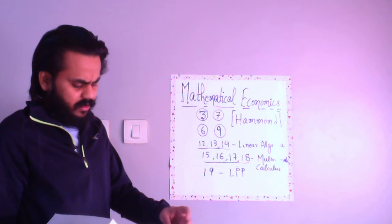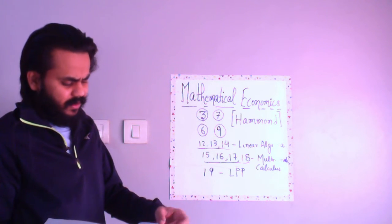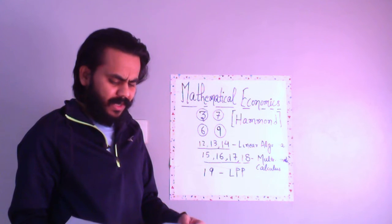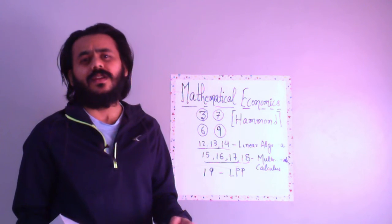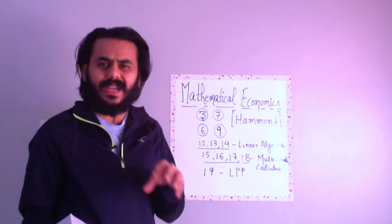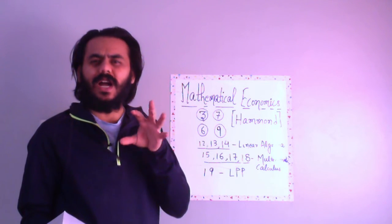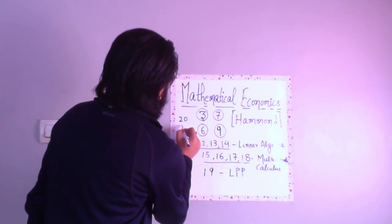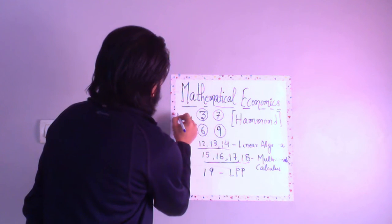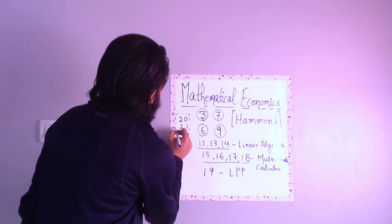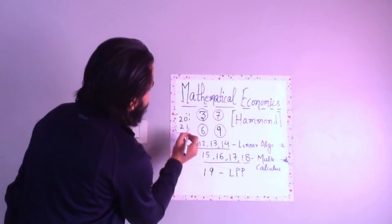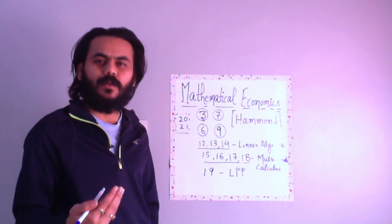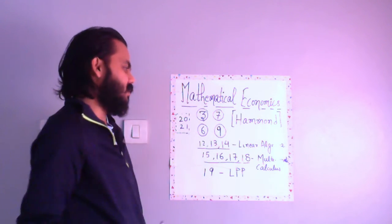Next is difference equations and differential equations in chapters 20 and 21. These are very optional because there is not much exposure to these chapters in entrance examinations. These are optional - you can read them in your free time whenever you are done with the core chapters.